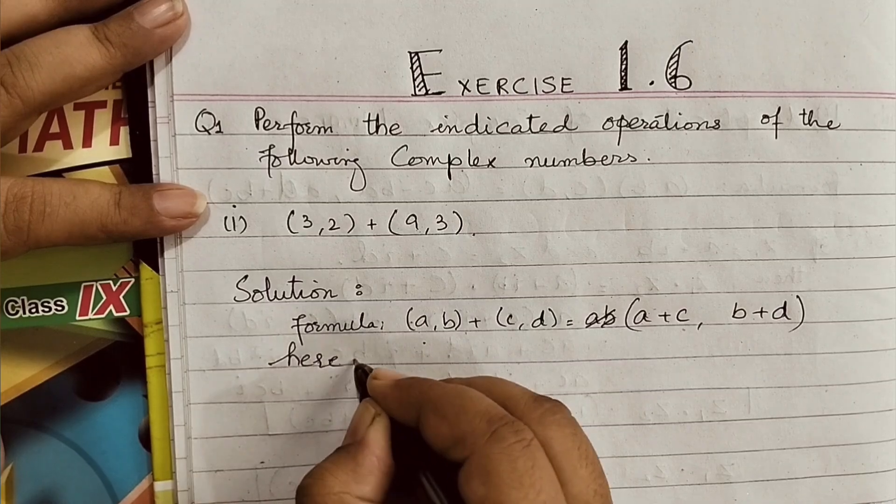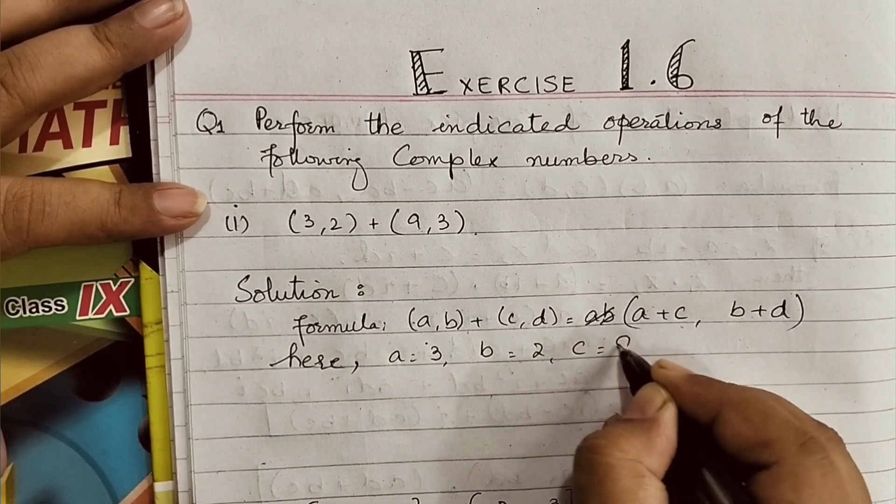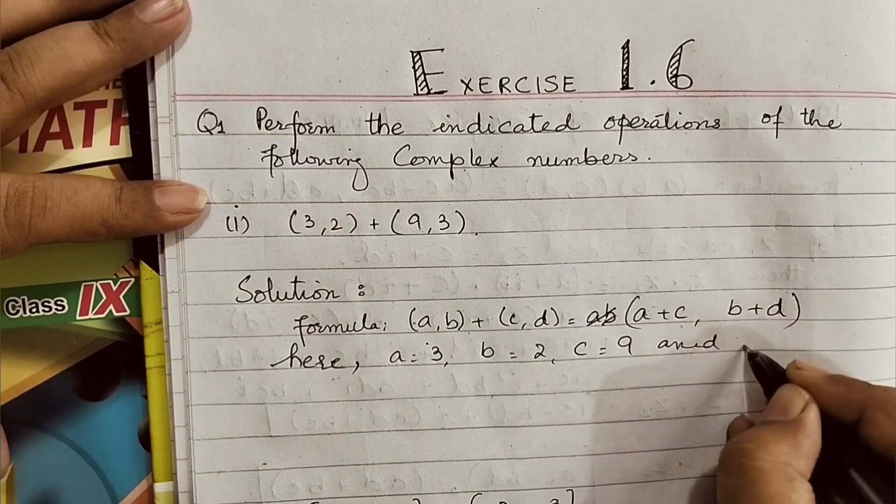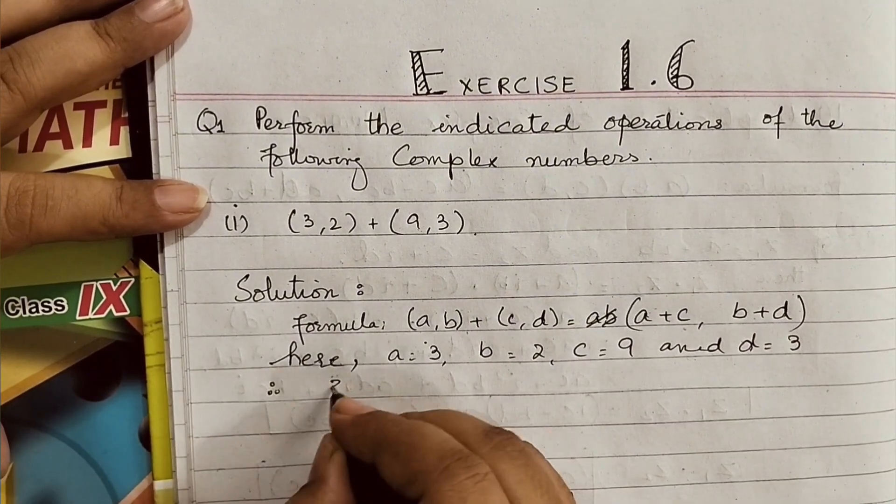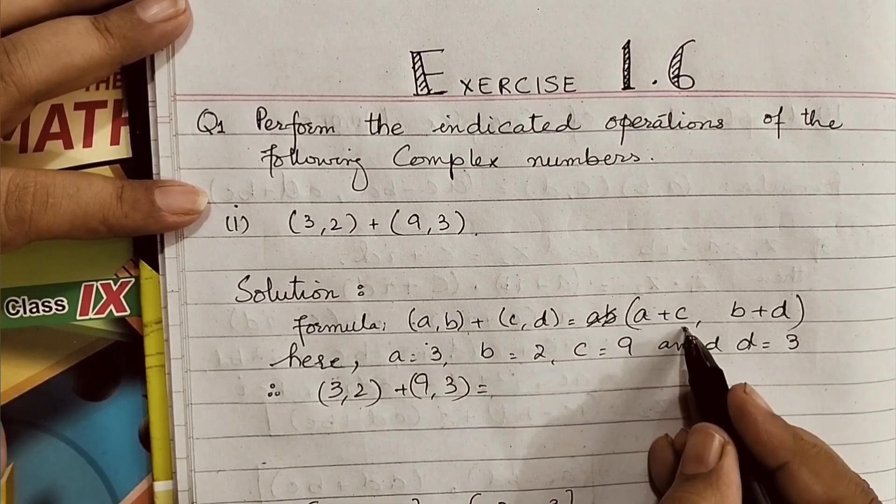Here, a is 3, b is 2, c is 9, and d is also 3. Therefore, (3, 2) plus (9, 3) will become a plus c.